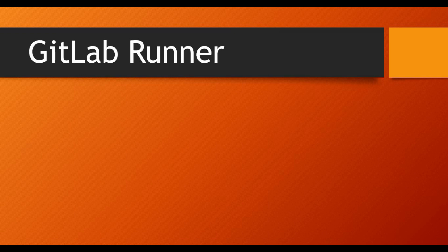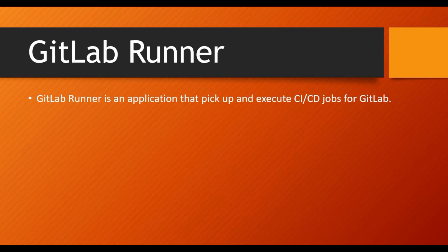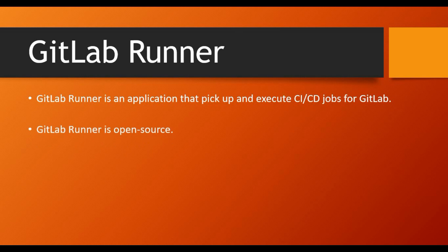GitLab Runner is one of the key topics you need to understand to run CI/CD in GitLab. GitLab Runner is an application that picks up and executes the CI/CD jobs which you run on GitLab. You can compare this to Jenkins — if you have used Jenkins you may have seen Jenkins nodes where you run jobs. Similarly, GitLab Runner is the place where you run jobs. It's an open source component that you set up on the machine you want to act as a host.